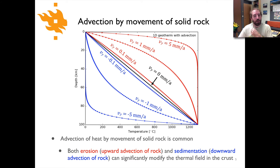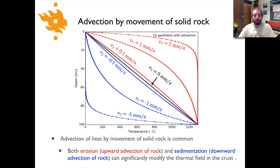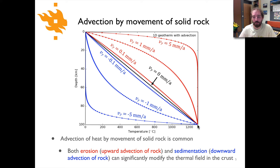If we take our solution from the previous video lecture for the one-dimensional heat advection and diffusion equation, we can make plots like this. The black line indicates a case where there is no advection and no heat production, so temperature simply goes from zero to 1300 degrees C at a depth of 100 kilometers — a straight line.